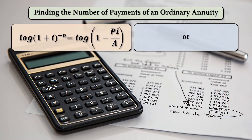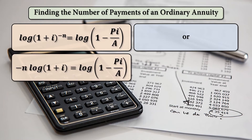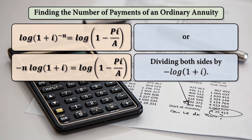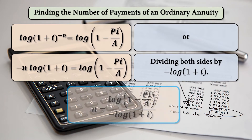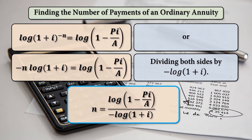Taking down negative N from the log, that is negative N times log of 1 plus I. Then dividing both sides by negative log of 1 plus I, N is equal to log of the quantity 1 minus PI over A, all over negative log of 1 plus I.